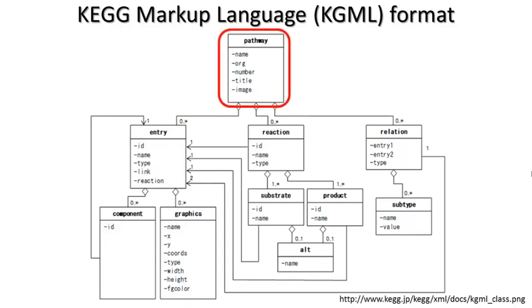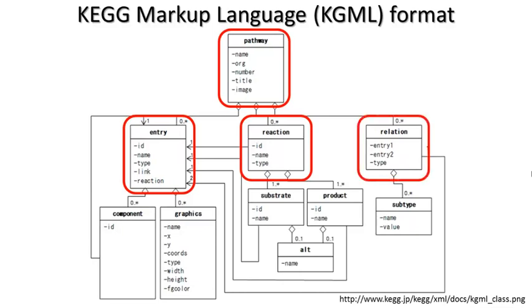The second, more informative format is the KEGG markup language or KGML format. Here a pathway has properties such as its basic information, name, organism, number, etc. It defines a number of entries such as reactions and relations. The substrate and product are defined as features of reactions.